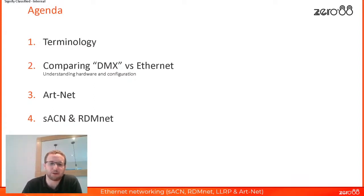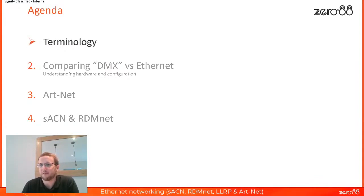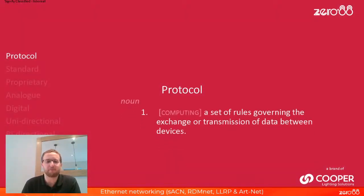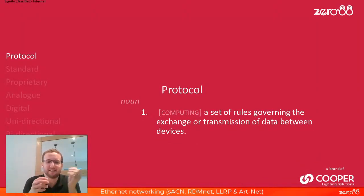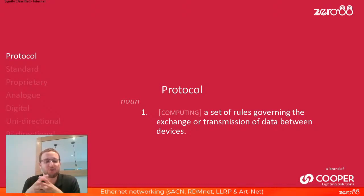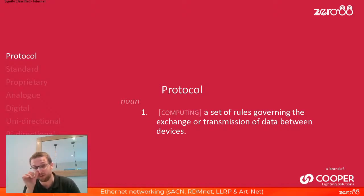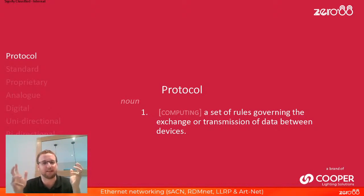The terminology section will only take two or three minutes — eight key words, the same ones as in the DMX session. The first term is protocol. A protocol is a set of rules or a way of doing something to get data from one place to another. If you were to meet the queen, there is a protocol — a way you have to behave, a list of things you have to do. Exactly the same applies here: if we want a console to speak to a moving light, we use a protocol, a set of rules.